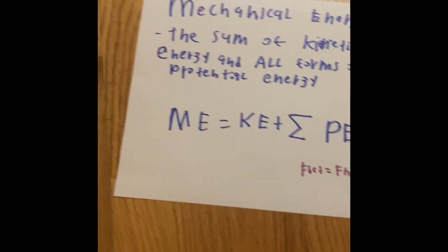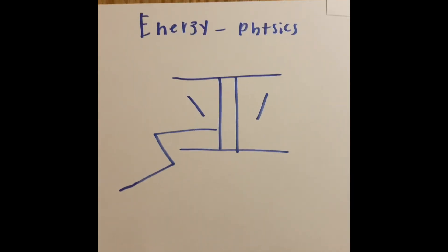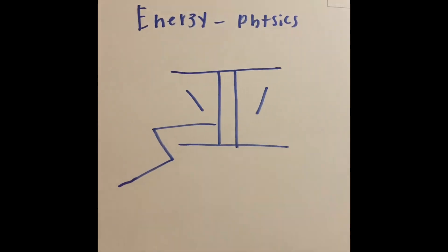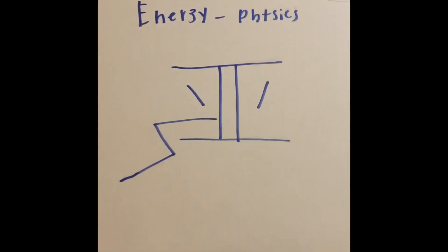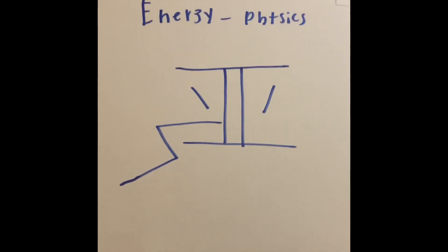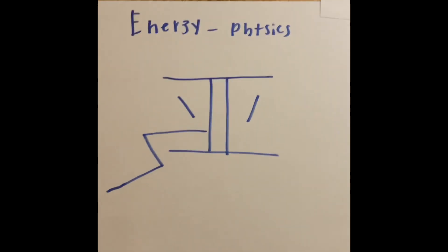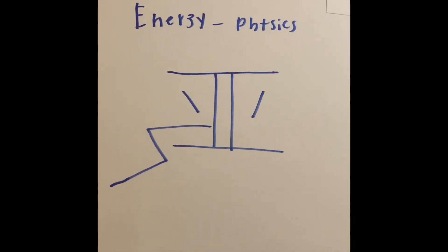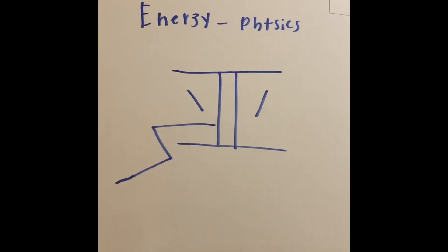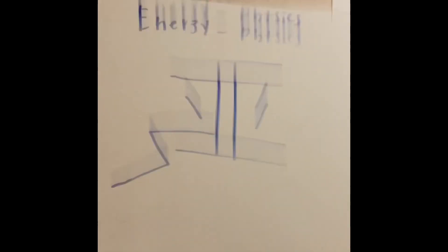So yeah, that is going to be part one of energy and physics. In part two, what we're going to do is solve a math slash physics problem about roller coasters to understand mechanical energy, kinetic energy, and the potential energy. I hope this video has helped you understand the energy part one. Thank you for watching. Like and subscribe.